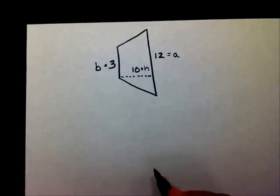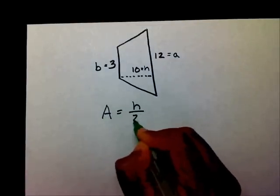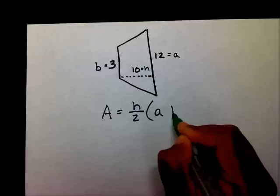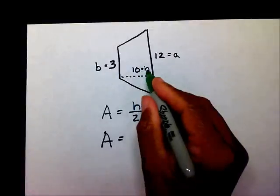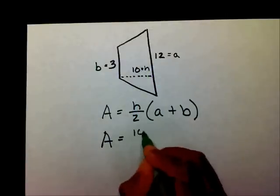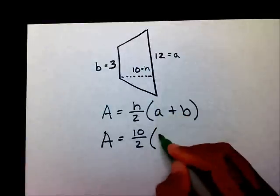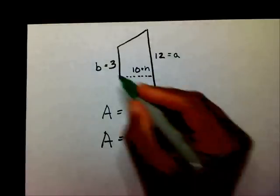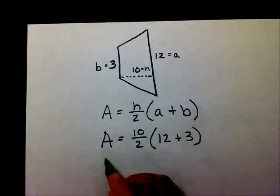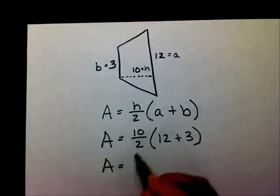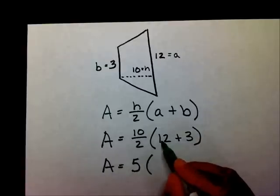So, I'm going to write a equals h divided by 2 times a plus b. So, a equals, I hope you wrote 10 over 2. For your a, you're going to write 12 plus for your b, you're going to write 3. So, your a is going to equal 10 divided by 2, which is 5. And 12 plus 3 is 15.